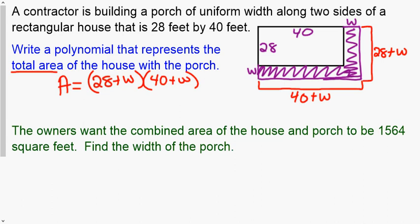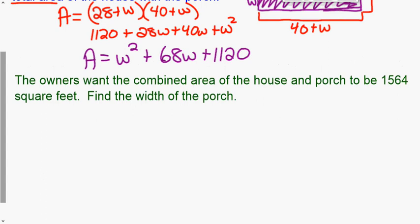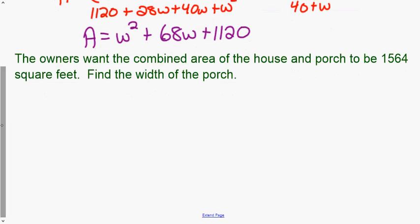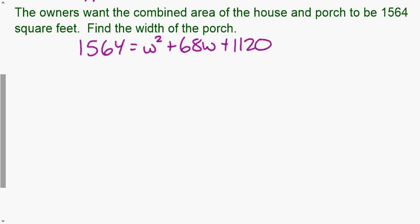To write a polynomial for the total area, we multiply the new width by the new length: (28 + w)(40 + w). Using FOIL — or area, split, or stack — multiply those two binomials. Write the answer in standard form: combine like terms to get w² + 68w + 1120. The owners want the combined area to be 1564 square feet, so 1564 = w² + 68w + 1120.